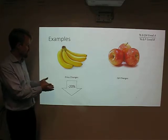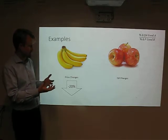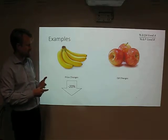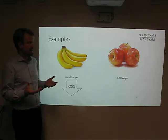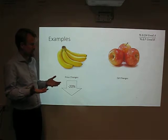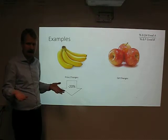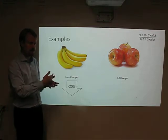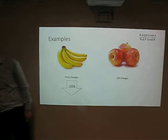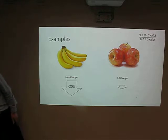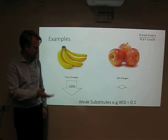Bananas and apples. Price changes for bananas — they go down by 20%. We're thinking they're probably substitute products, so we'd see a percentage change going down for the quantity demanded for apples. However, some people prefer apples to bananas and think: the price of bananas has gone down, but I don't really like bananas — I'm an apple eater, I'm always going to eat apples. You get a few people switching off apples, but probably not the same as the proportional change in price for bananas. It is therefore inelastic — a weak substitute.